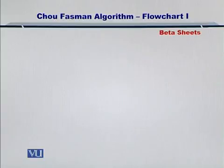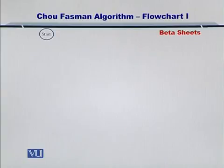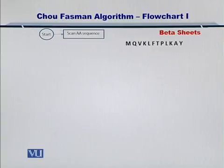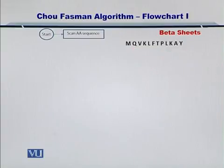Towards evaluating the formation of beta sheets from amino acid residues in the protein sequence, first you need to scan the entire sequence. You take an amino acid sequence — I am quoting an example sequence here on the right side. By scanning the amino acid sequence, I mean that you have to start from the left side and go towards the end of the sequence.